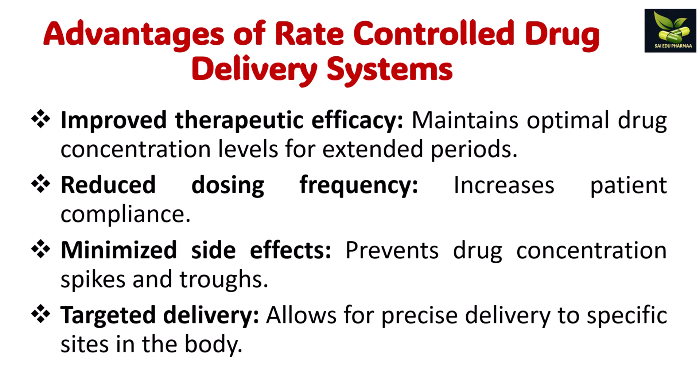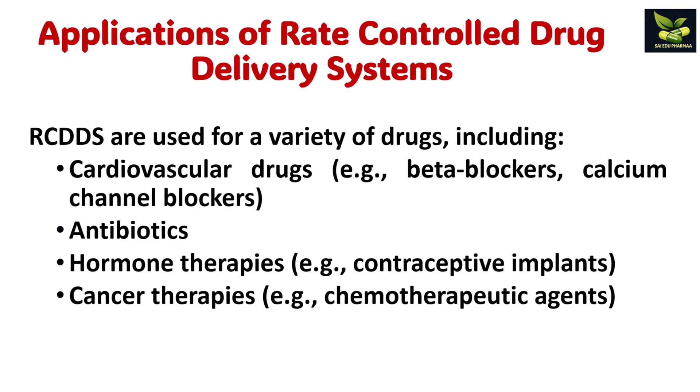What are the advantages of rate controlled drug delivery systems? They improve therapeutic efficacy by maintaining optimal drug concentration levels for extended periods. Because the level is maintained constant in systemic circulation, the dose and dosing frequency is reduced, hence patient compliance is achieved — patients don't have to take a drug many times a day. Side effects are minimized because drug concentration spikes are prevented, and precise delivery to specific sites allows targeted delivery.